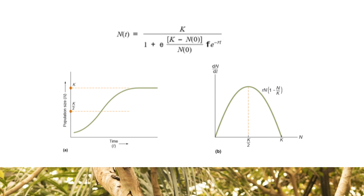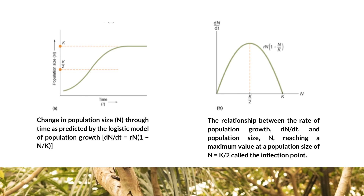We can use the rules of calculus to integrate the logistic growth equation and express population size as a function of time. Figure A shows the change in population size N through time as predicted by the logistic model of population growth. Initially, low values of N means that the population grows exponentially. As N increases, the rate of population growth decreases, eventually reaching 0 as the population size approaches the carrying capacity K. Figure B shows the relationship between the rate of population growth and the population size N. It takes the form of a parabola, reaching a maximum value at a population size of N equals K over 2, called the inflection point.